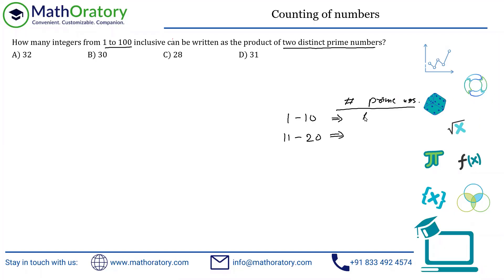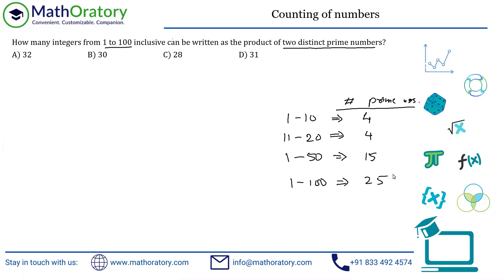From 1 to 10 there are four prime numbers, and from 11 to 20 there are also four prime numbers. In any other group of 10 numbers, you will never find four prime numbers. From 1 to 50 there are 15 prime numbers, and from 1 to 100 there are 25 prime numbers. The key ones to remember are 15 and 25.